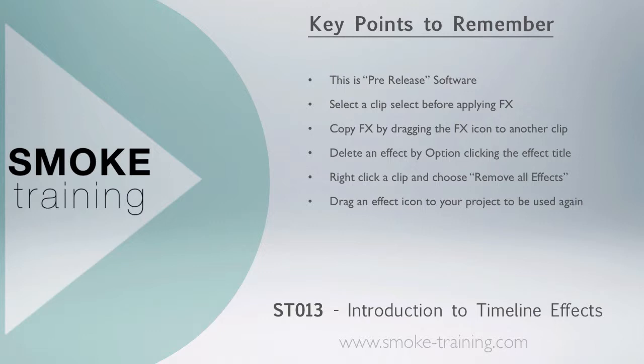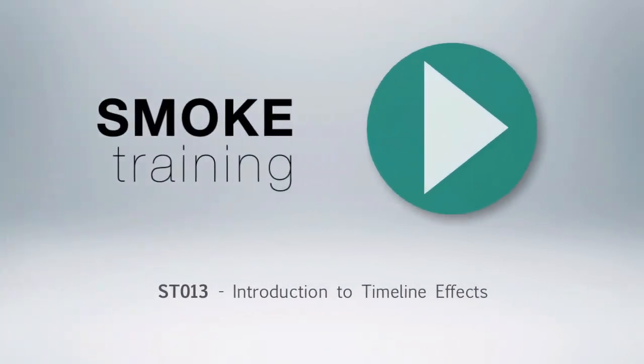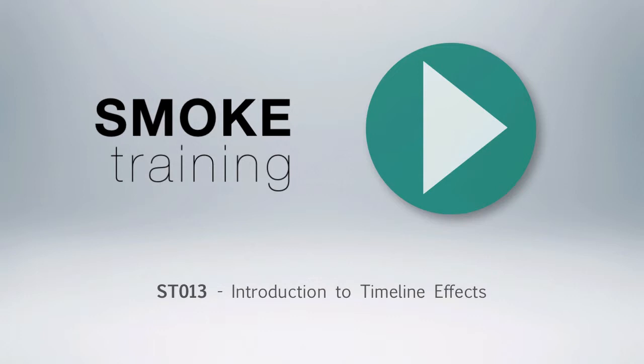Just a quick reminder that Smoke 2013 is currently pre-release software, so features and screens seen in this episode may change at final release. Make sure you select a clip segment before applying a timeline effect to ensure it gets added to the intended segment. Copying an effect from one clip to another is as simple as dragging one of the effect buttons from the effect bar onto another segment. Deleting a single effect is done by Option-clicking the title in the effect bar, or right-click the segment and choose Remove All Effects. And a great way to store your favourite effects for use later — simply drag the effect title from the effect bar and drop it into a project folder. That brings to a close this episode of Smoke Training. Thanks for watching. Stay tuned for future episodes of Smoke Training that get you up to speed on the basics, fast.